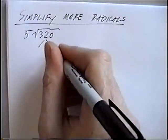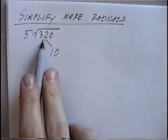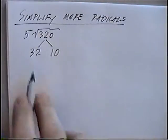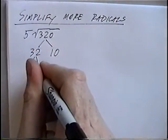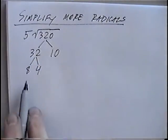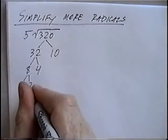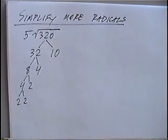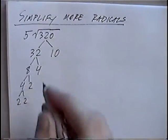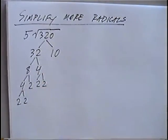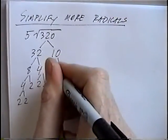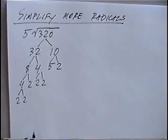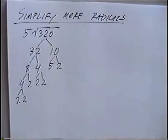Any time a number ends in 0, it means it's 10 times some number. For 320, that would be 32 times 10. The 32 we can factor using 8 times 4. The 8 we can factor as 4 times 2, and that 4 factors into 2 times 2. The other 4 from the 32 also factors into 2 times 2. And the 10 factors into 5 times 2. Do your factor tree as much as possible until you have just the prime factors at the bottom.